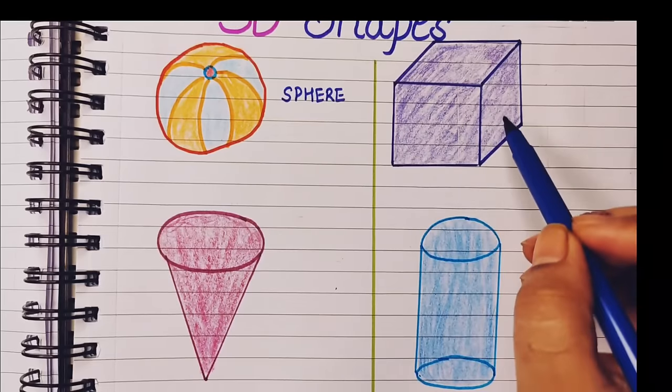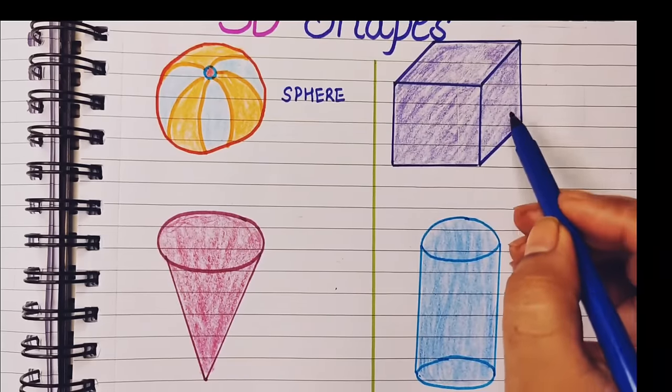The next shape is cube shape. It is just like a square but this is a three-dimensional square. It is known as cube: C-U-B-E, cube.